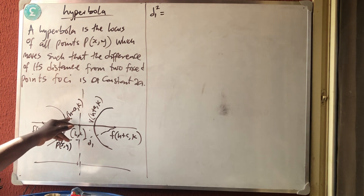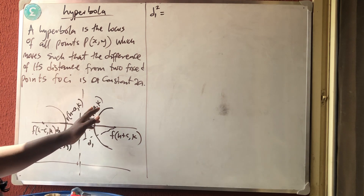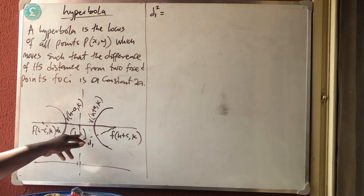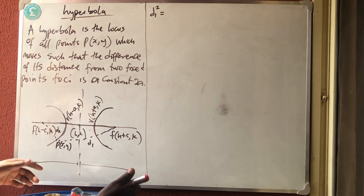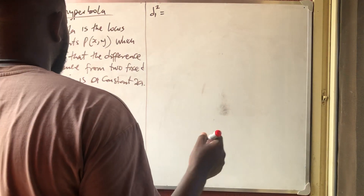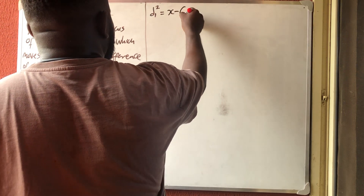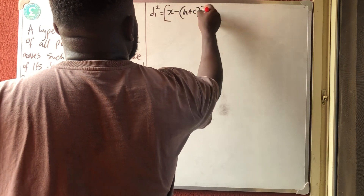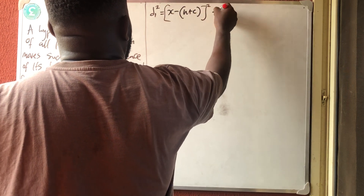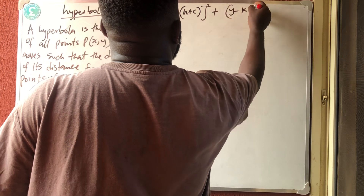The vertices are V(H − A, K) on the left and V(H + A, K) on the right. The center remains at (H, K). So the distance D1 squared equals the distance formula: (X − (H + C))² + (Y − K)².